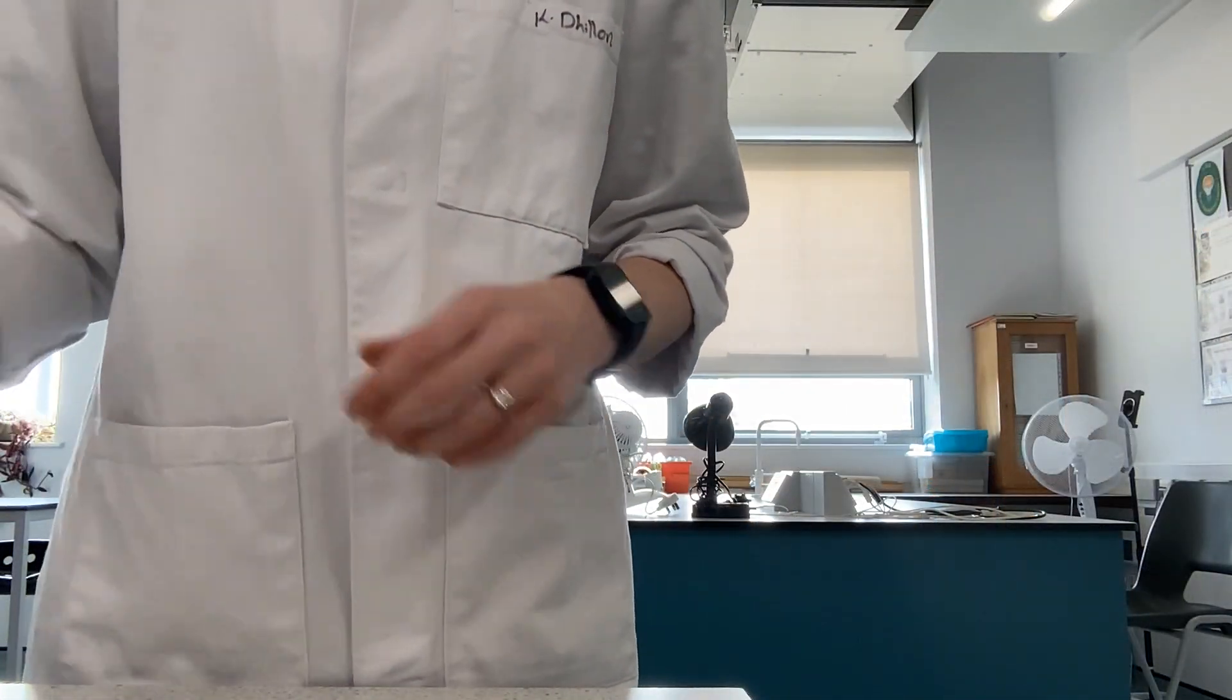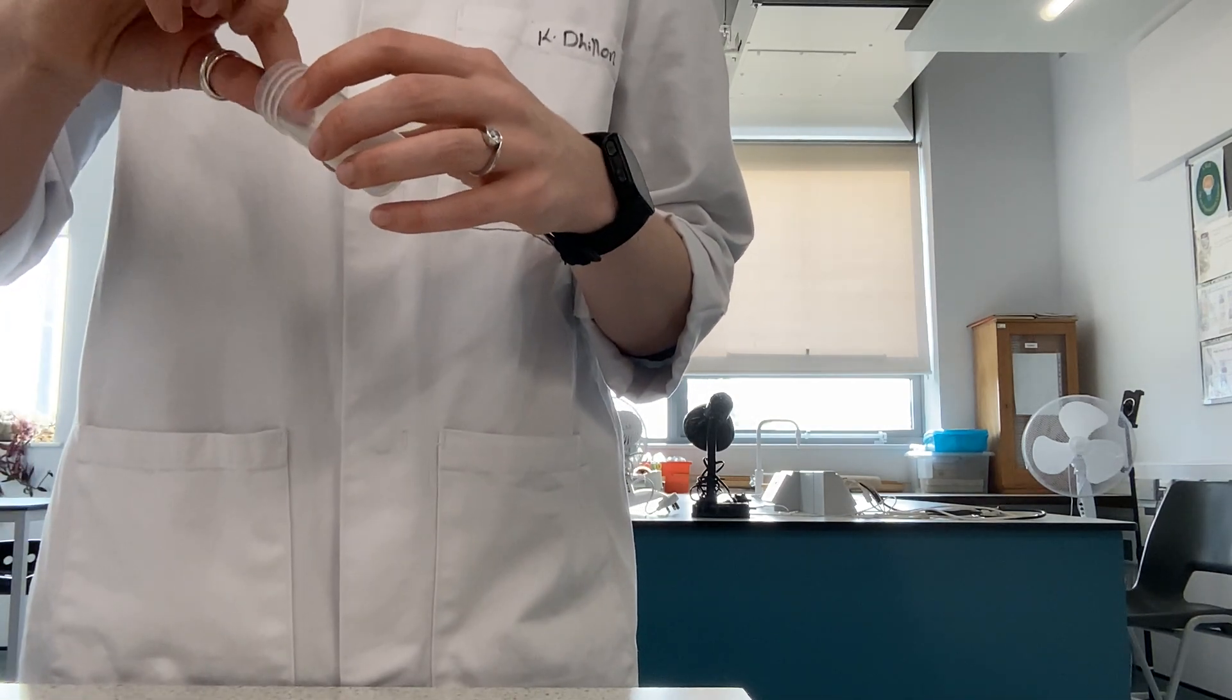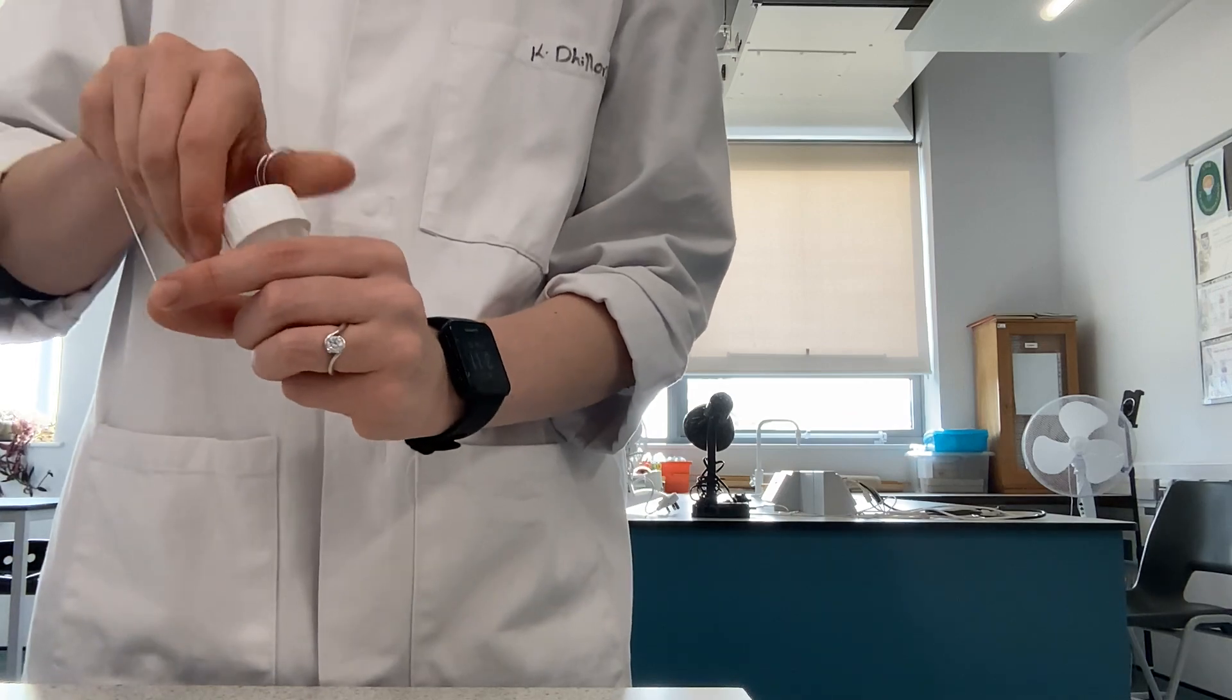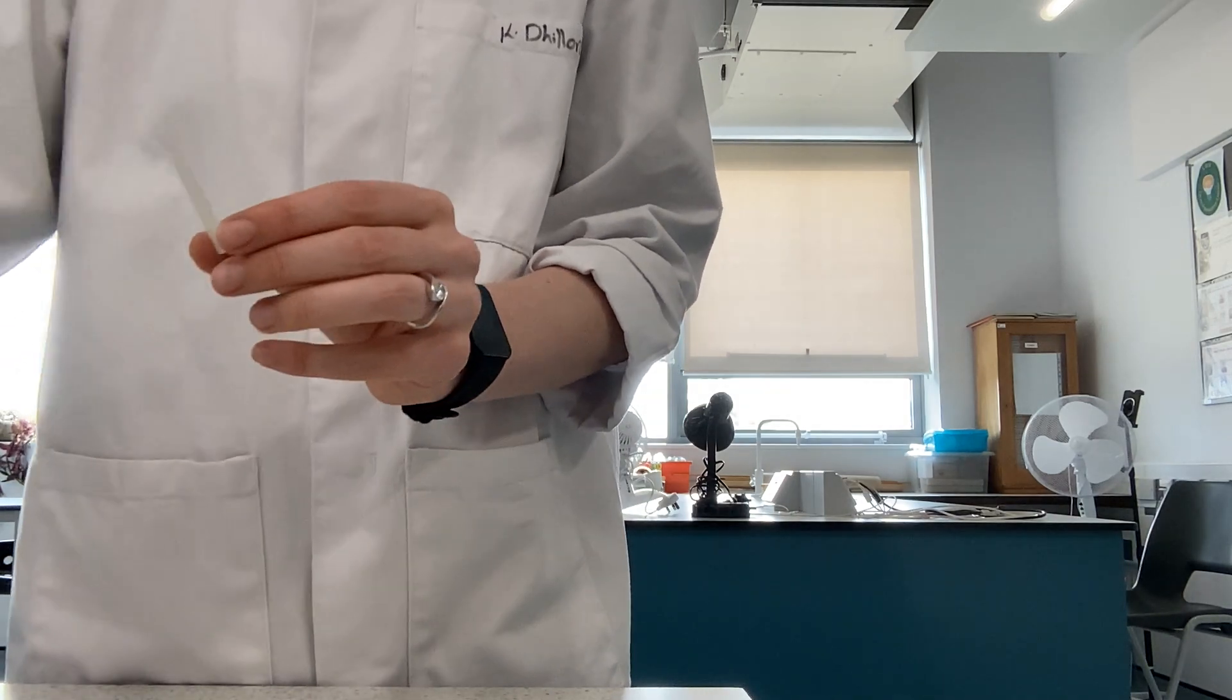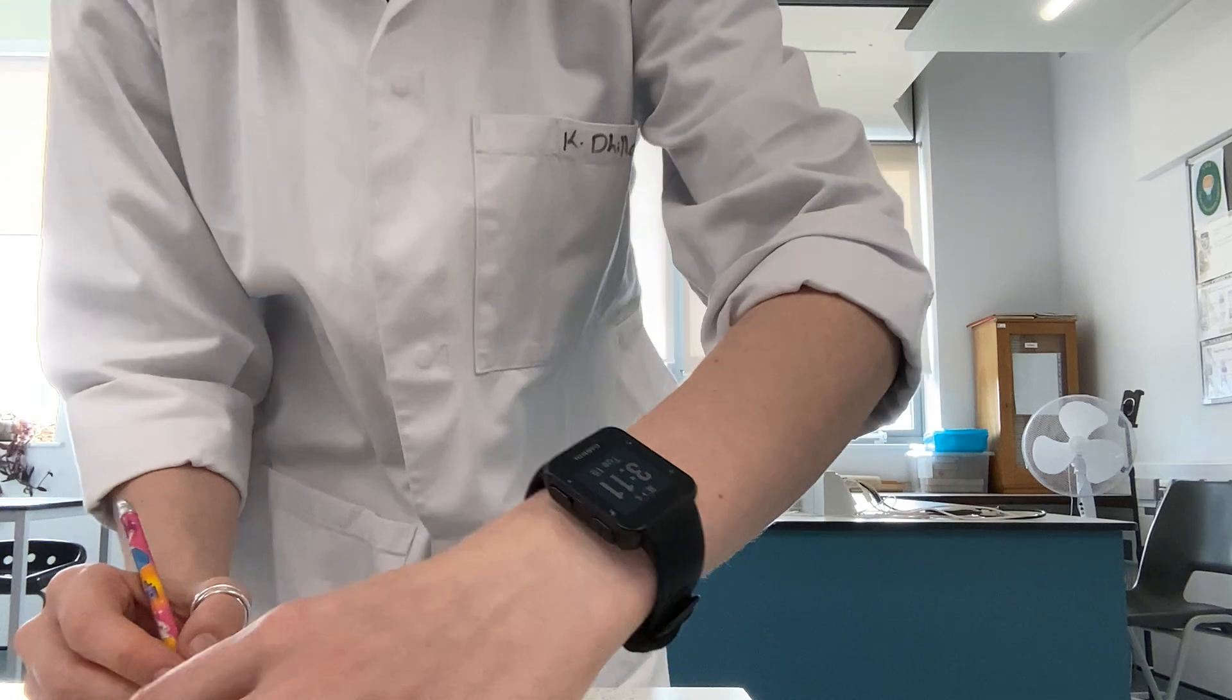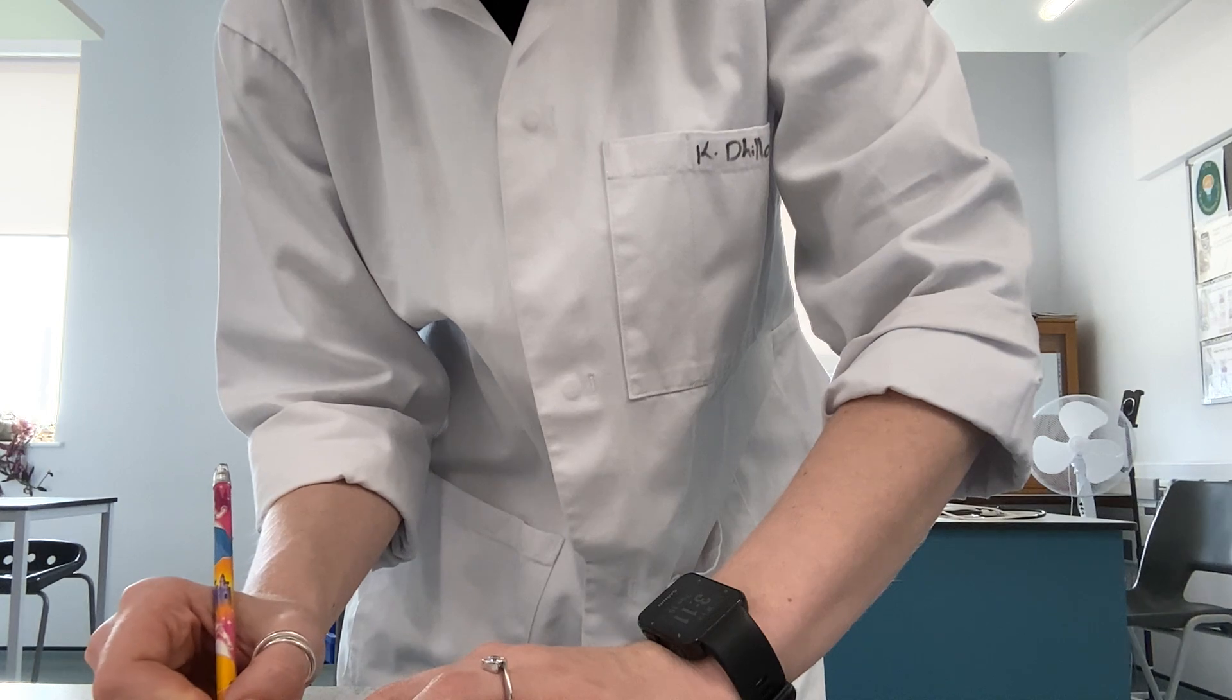What we'll now do is draw a pencil line onto our TLC plate. We need to very carefully get our TLC plate. What I will do is draw a pencil line along the bottom, and we always do a pencil line so that it does not run with the liquid. This will then be our starting point. Using a ruler, we'll draw our pencil line across the bottom.